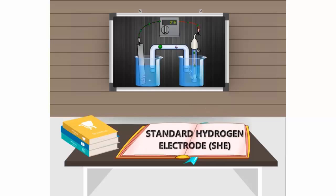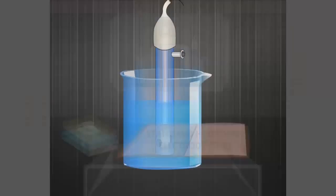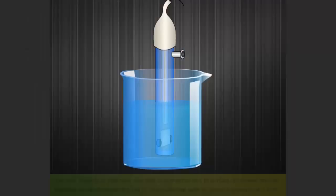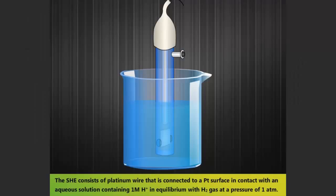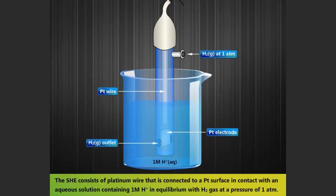Standard Hydrogen Electrode, i.e., SHE. Let us learn about Standard Hydrogen Electrode and Standard Electrode Potential. The SHE consists of a platinum wire that is connected to a platinum surface in contact with an aqueous solution containing 1M H⁺, in equilibrium with H₂ gas at a pressure of 1 atm.